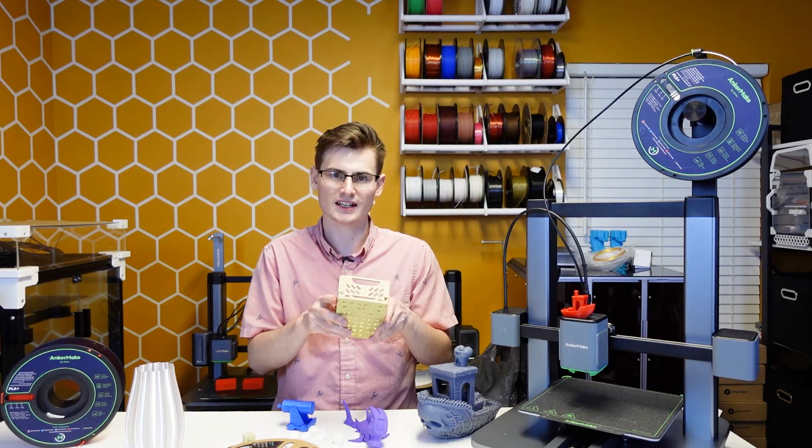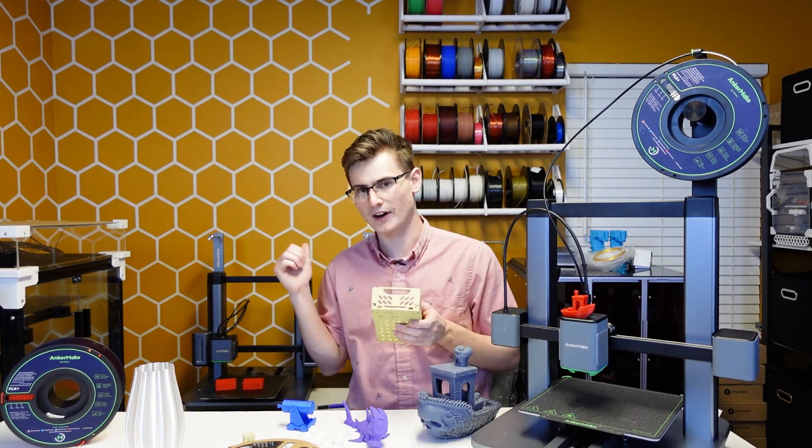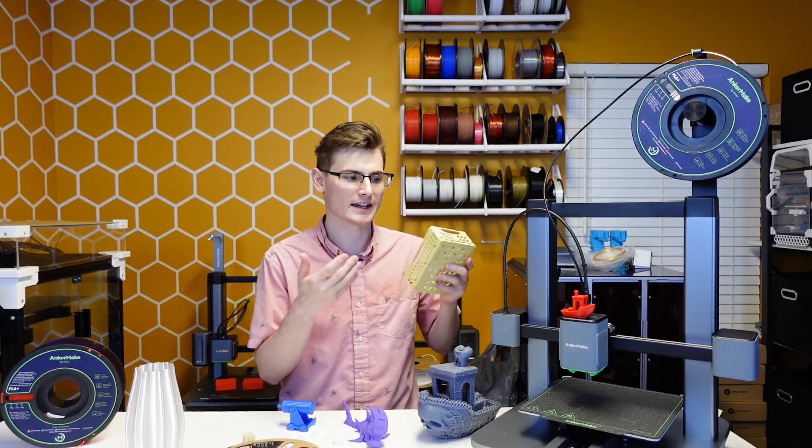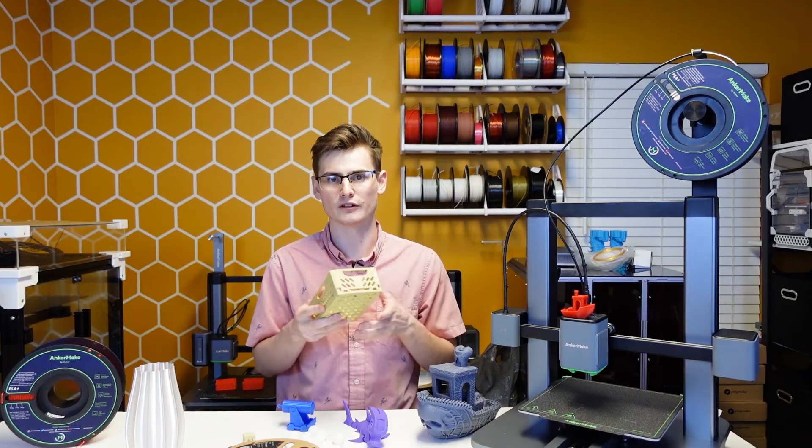But what I will say is, if this AnkerMake M5C had a camera like the M5 did, most likely the AI detection would have caught that, and it would have stopped the print, or at the very least, it would have notified the user.